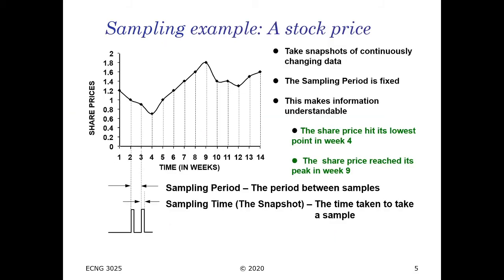Looking at the example of a stock price, we can see that the sampling period is going to be fixed, which makes it easier to understand. From observing the general trend, the lowest price was at week 4 and the highest price was at week 9. Two things to note: the sampling period is the time between two samples, whereas the sampling time is the time taken for a sample. In real-life scenarios, the impulse does not exist — it needs to be a very small rectangular window. The width of this small rectangular window is referred to as the sampling time, but the time between two samples is referred to as the sampling period.